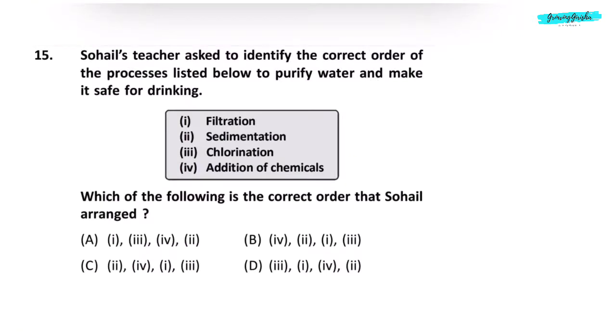Question 15. Identify the correct order of processes to purify water and make it safe for drinking: filtration, sedimentation, chlorination, addition of chemicals. Water is first allowed to settle so sediment of impurities is formed. Then chemicals like alum and lime are added so sediments further settle down. Then the water is filtered through sand and gravel. Then it is chlorinated to make it free from germs and bacteria. The correct order is option C.